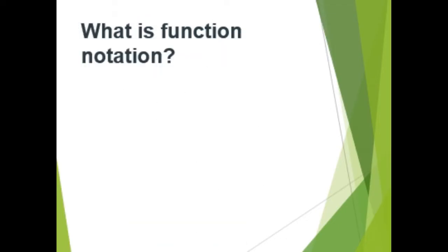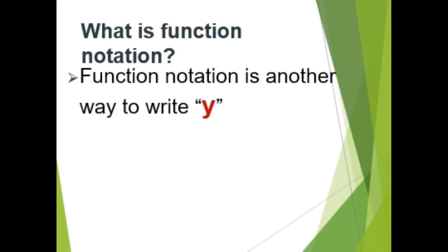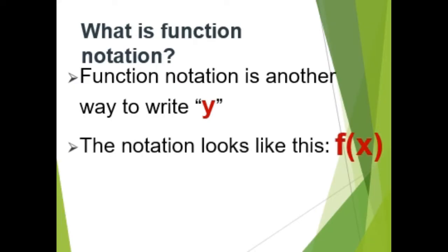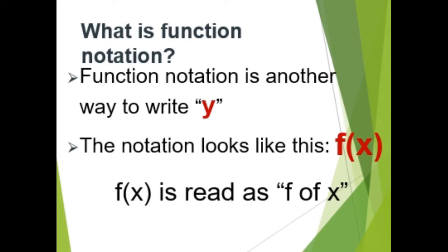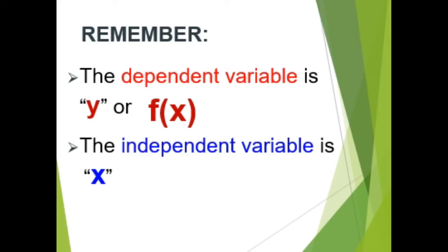What is function notation? Function notation is another way to write y, read as f of x. Always remember that function notation is a way to write functions that is easy to read and understand. Functions have dependent and independent variables. The dependent variable is y or f of x, and the independent variable is commonly x.